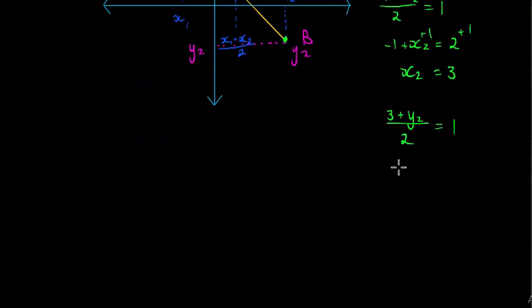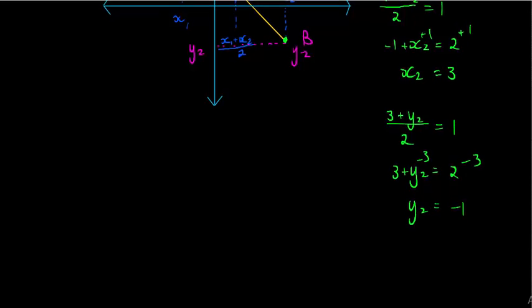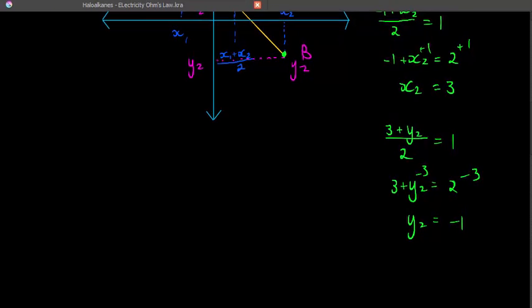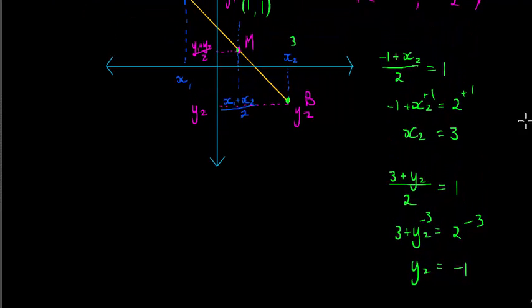Same business. I'm going to multiply by 2. That gives me 2. And then I'm going to subtract 3 on both sides to get Y2 on its own. And that gives me negative 1. So this coordinate here is supposed to be negative 1. And there we go.